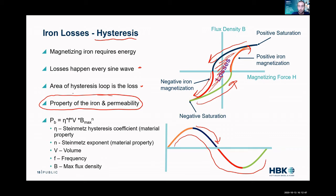Fortunately we have an equation — it's a little complex, but we can get the power loss of the iron with this equation. It's a function of a couple of material properties: the Steinmetz hysteresis coefficient, the Steinmetz exponent, the volume of the iron, the frequency of excitation.